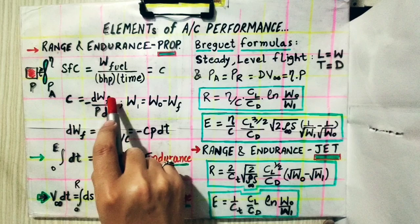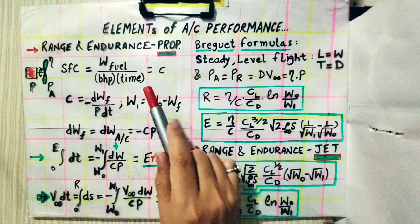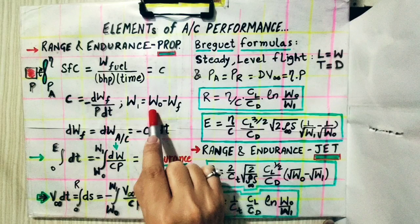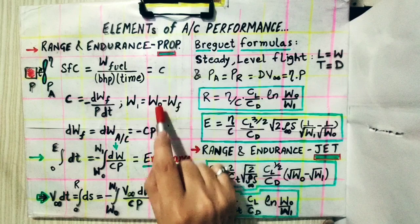As the aircraft flies from one point to another, the fuel gets consumed and the fuel weight decreases — the minus sign reflects this. At the initial time, the total weight of the aircraft including structure, payload, and fuel is W₀. When it reaches its destination, its weight is W₁, which equals the initial weight minus the weight of all fuel consumed.